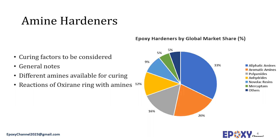Aliphatic, cycloaliphatic, and aromatic amines are all employed as epoxy hardeners — aliphatic amines being the most reactive and aromatic amines being the least reactive, with cycloaliphatic amines lying between the two. Aromatic amines offer excellent end properties; however, in recent years concern about their health effects has led to increased use of cycloaliphatic and aliphatic amines.